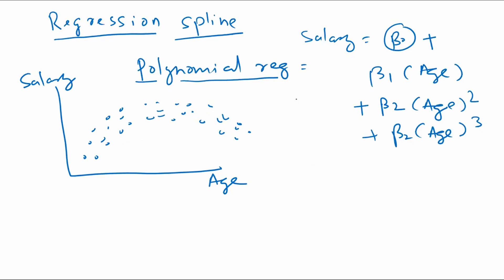Polynomial regression is one way of doing that, but it has been seen that the performance of polynomial regression is not quite good and it can be made better — and that's where regression splines come into the picture. In regression spline, you first split your entire sample into a few segments. In the first segment, the relationship is increasing in order — it's increasing — and you can actually fit a straight line to this.